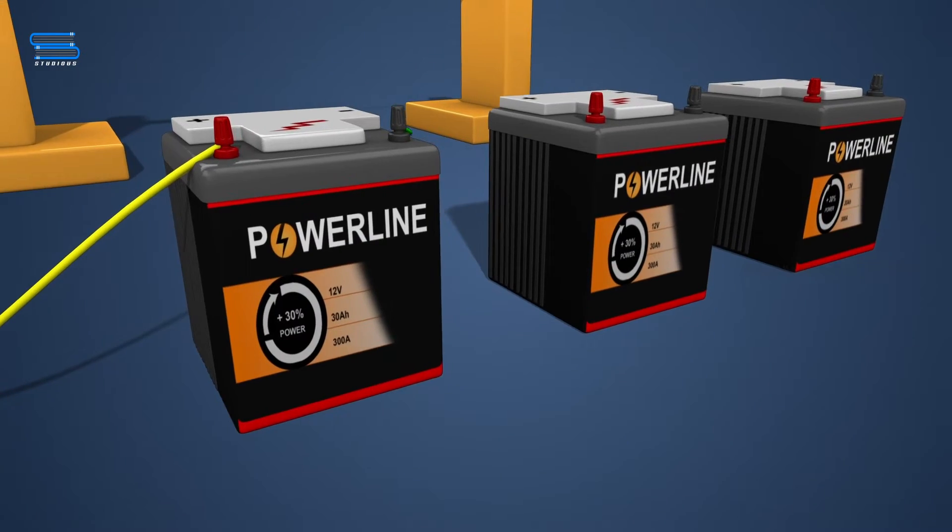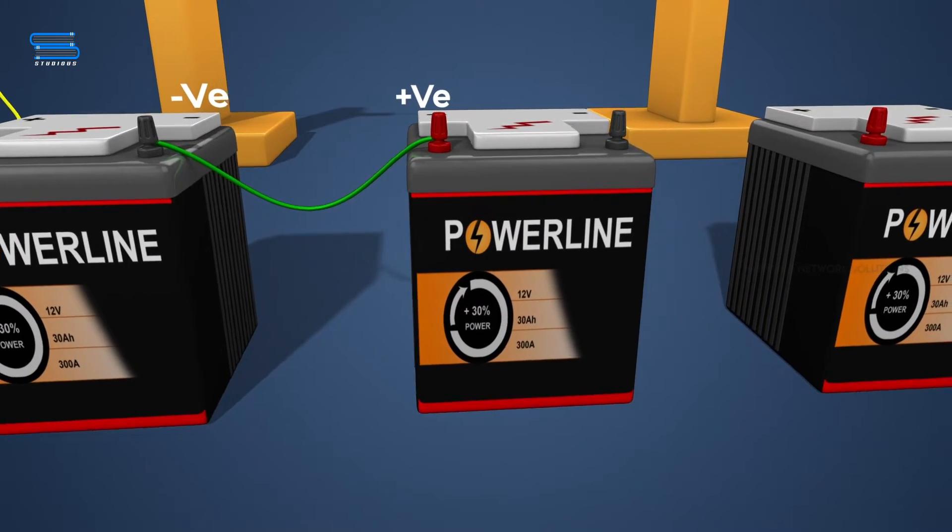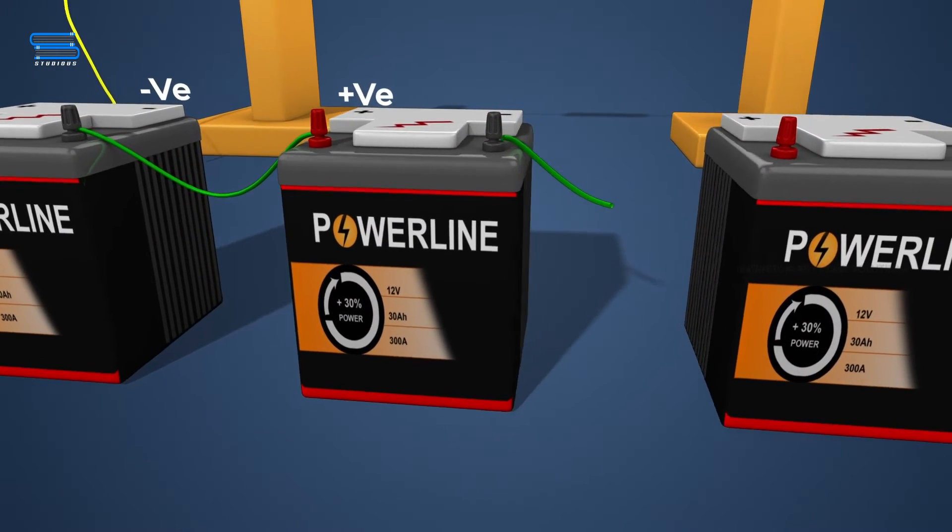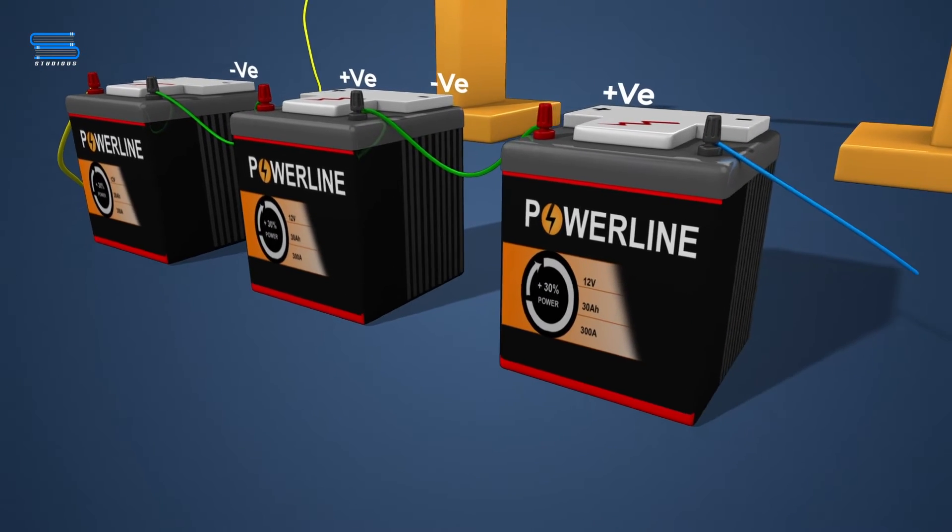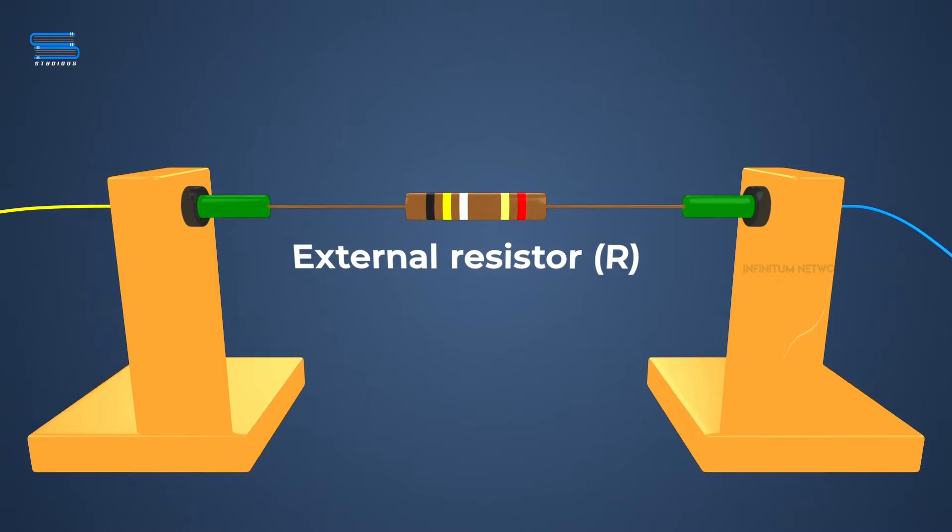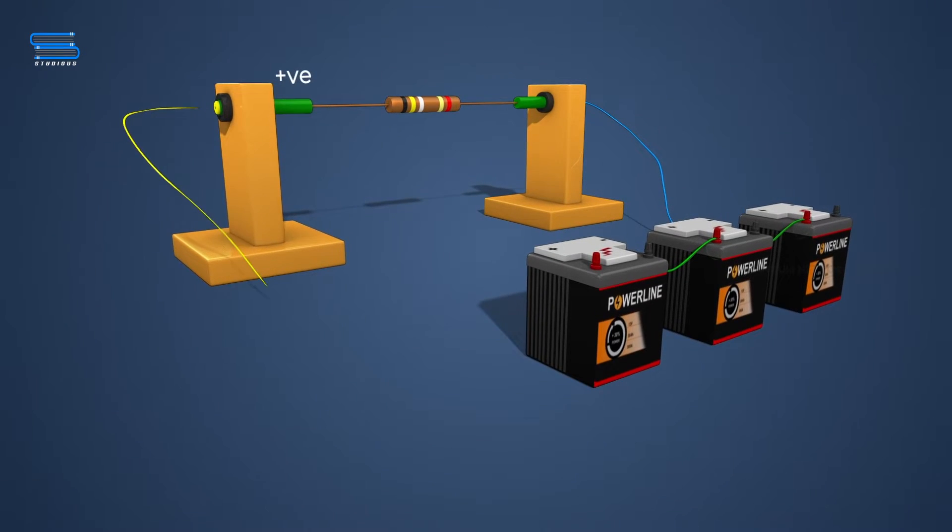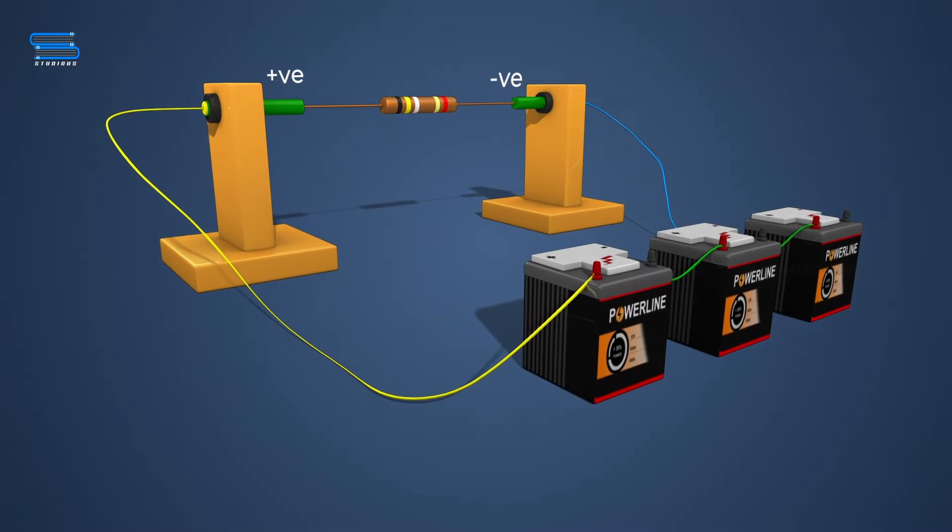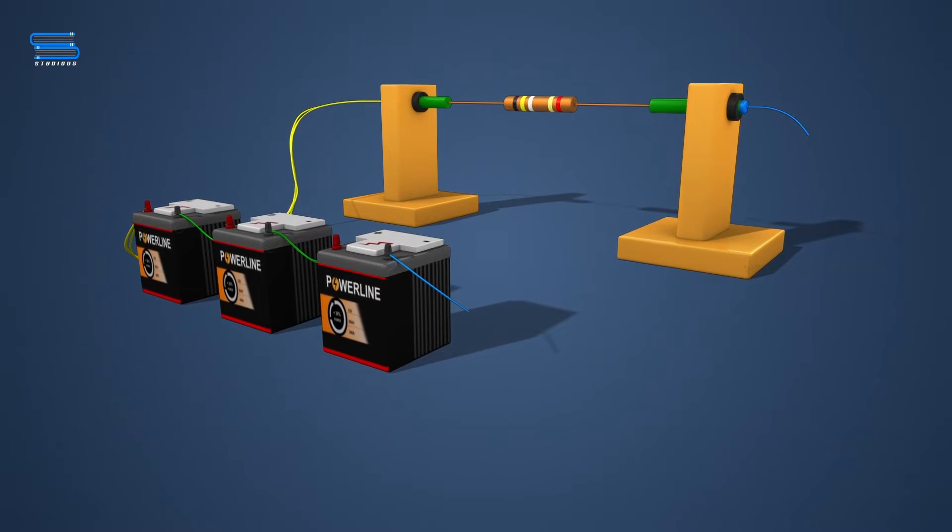To create a series combination of cells, the negative terminal of the first cell is connected to the positive terminal of the second cell, the negative terminal of the second cell is connected to the positive terminal of the third cell, and so on. Finally, the external resistance R is connected in series between the positive terminal of the first cell and the negative terminal of the last cell. Such a combination of cells is called a series combination of cells.